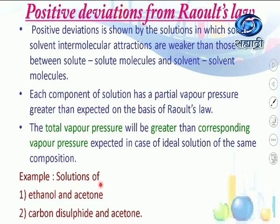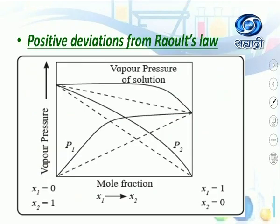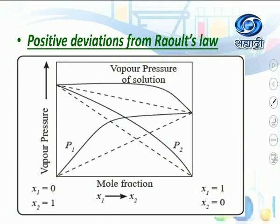Let us discuss the graph for positive deviation — a graph of vapor pressure versus mole fraction. At this point, X1 equals 0, so X2 equals 1, because X1 + X2 = 1. At the other end, X1 equals 1 and X2 equals 0. From the equation P1 = P1⁰·X1: when X1 = 0, P1 = 0; when X1 = 1, P1 = P1⁰.